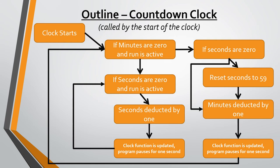Now here comes the fun part — the countdown clock. To help illustrate it, I did a diagram. The clock is built on a loop: when the clock starts it enters a while loop that checks if the minutes are above zero and if run is active. If minutes are active it gets to a second while loop that checks if the seconds are zero. If not, seconds are deducted by one, the clock function updates, and then the program is paused for one second using the time function.